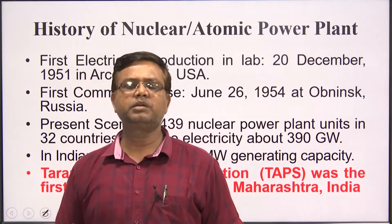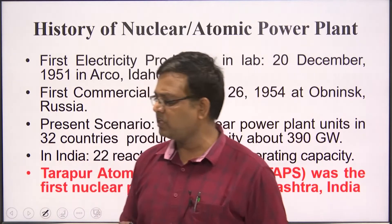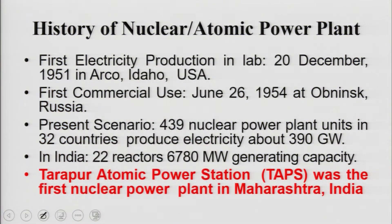A brief history of nuclear power: the first electricity production in a lab via nuclear process was on 20th December 1951 in Arco, Idaho, USA. The first commercially used nuclear electricity production was in Russia on 26th June 1954. In the present scenario, throughout the world there are 439 nuclear power plants in 32 countries, producing approximately 390 gigawatts. India presently has 22 reactors producing approximately 6,780 megawatts, and Tarapur Atomic Power Station in Maharashtra was the first nuclear power plant in India.